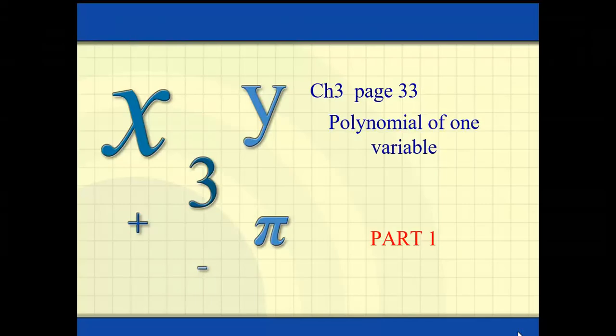So this is chapter 3, page 33, Polynomial of One Variable. There are two parts of this chapter. I'm going to start the first part here in this PowerPoint, and part two in another PowerPoint.